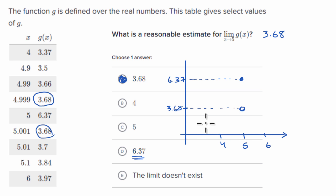So the graph might look something like this, we could infer. It looks like it's doing something like this, where it's approaching 3.68 from values less than five and values greater than five, but right at five, our value is 6.37.